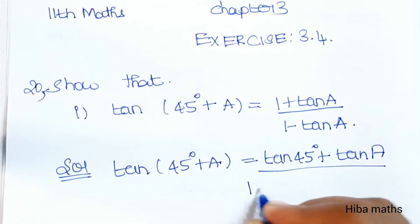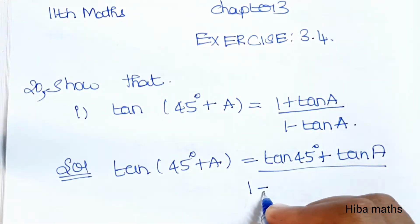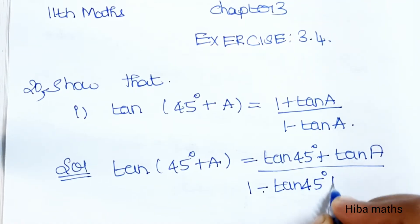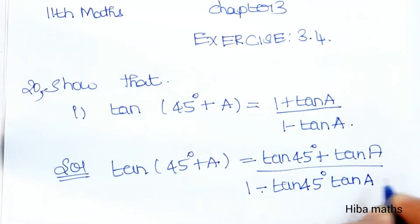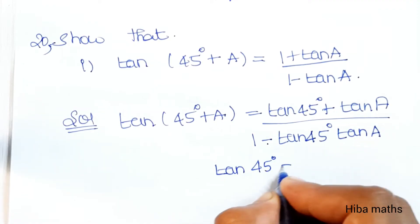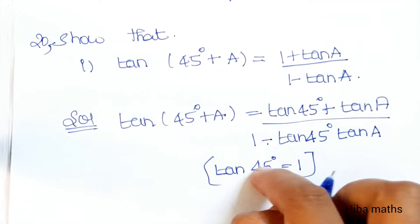The value of tan45° is 1. That's how you substitute.